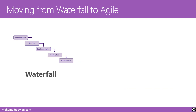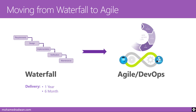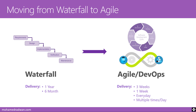Moving from waterfall to agile — the story begins when companies started moving from the waterfall methodology, which has delivery every one year or six months, to agile and DevOps, which has delivery in three-week sprints, or one week, or every day, or sometimes multiple times per day.